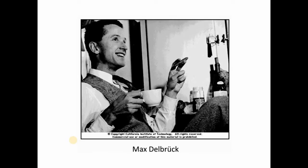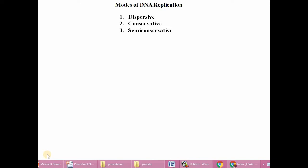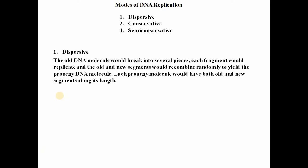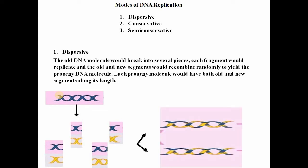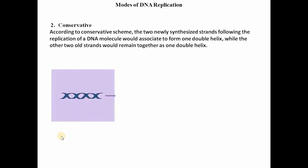DNA replication was proposed through three possible theories. The first is dispersive, the second is conservative, and the third is semi-conservative. In the dispersive method, the parent DNA (indicated in blue) is divided into small segments, and these segments are used as templates to synthesize complementary DNA, after which old and new DNA segments are mixed together.